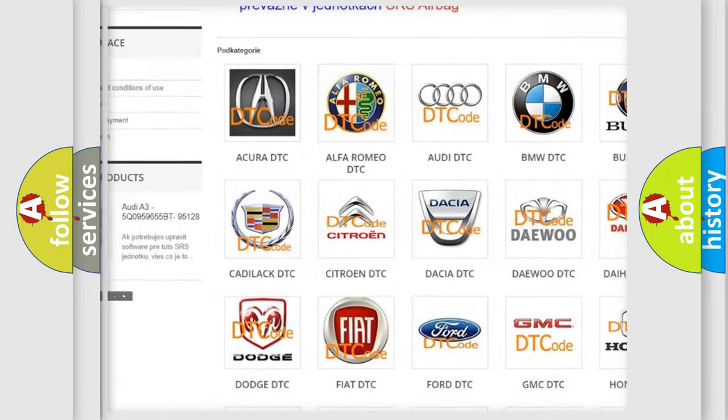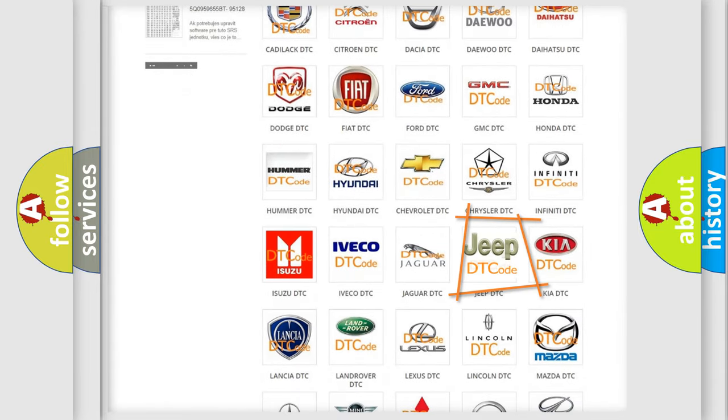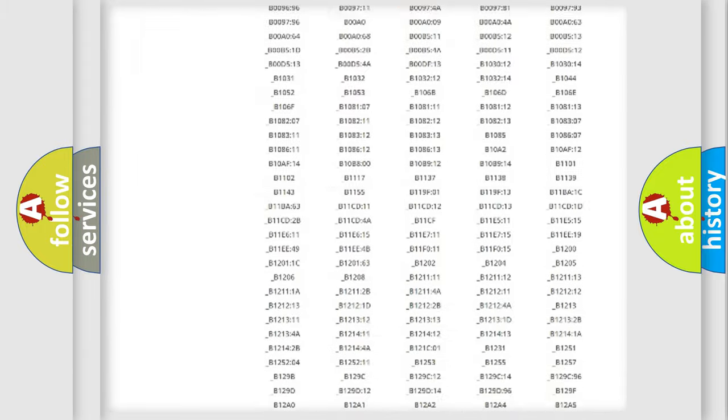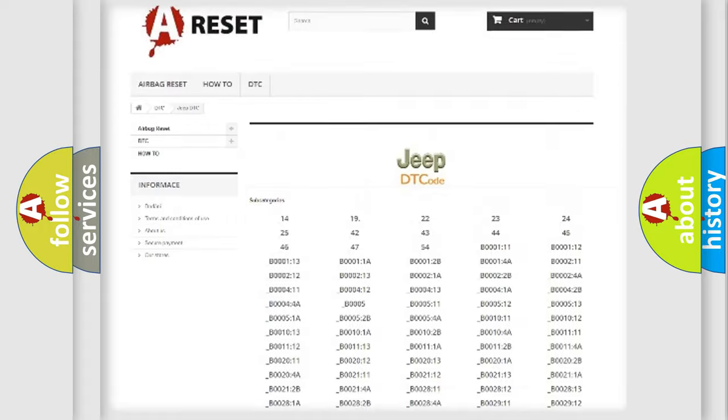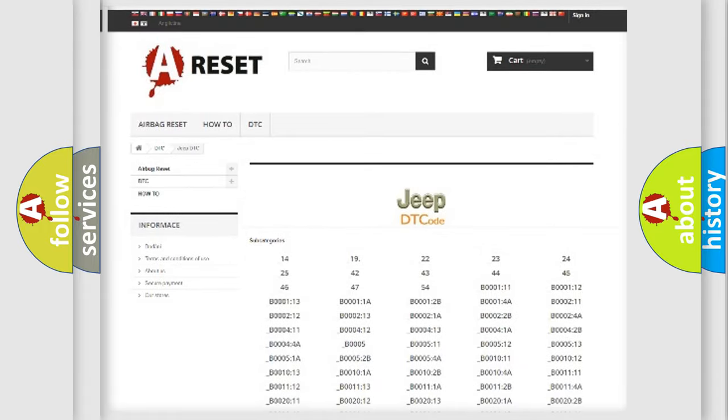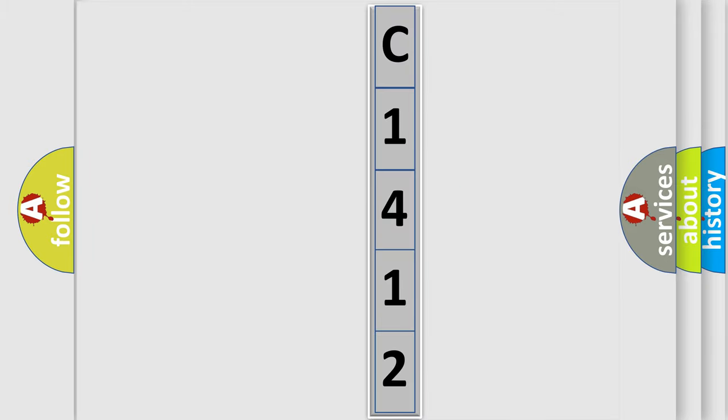Our website airbagreset.sk produces useful videos for you. You do not have to go through the OBD2 protocol anymore to know how to troubleshoot any car breakdown. You will find all the diagnostic codes that can be diagnosed in Jeep vehicles, and many other useful things. The following demonstration will help you look into the world of software for car control units.